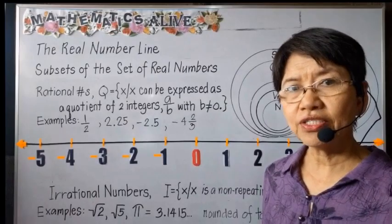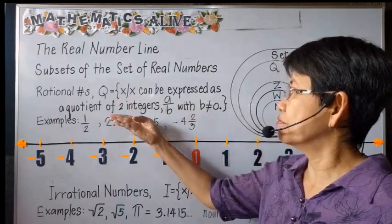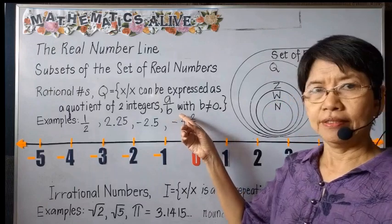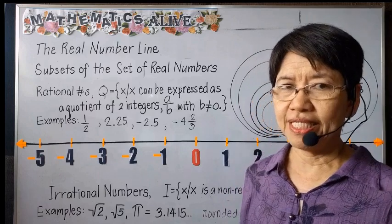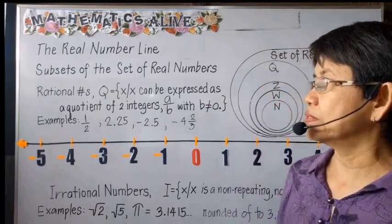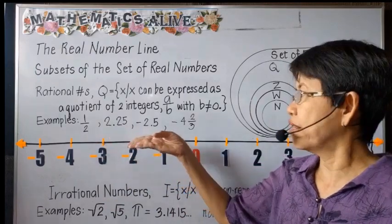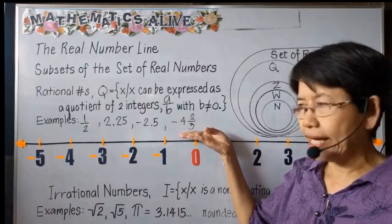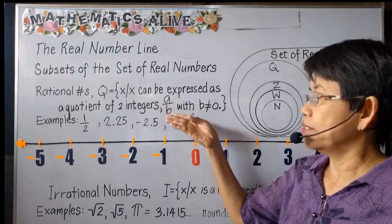The set of rational numbers is the set of all x such that x can be expressed as a quotient of two numbers, a over b, with b not equal to zero — meaning the denominator should not be equal to zero. In mathematics, dividing by zero is undefined. Examples of rational numbers include one-half, 2.25, negative 2.5, negative 4, and two-thirds.